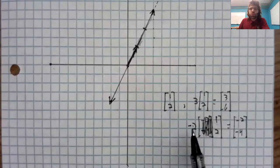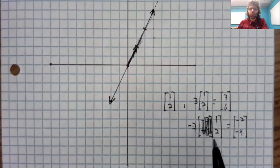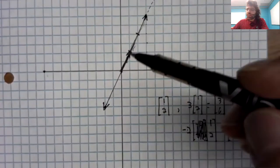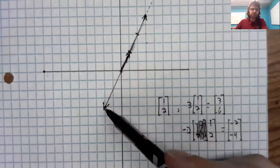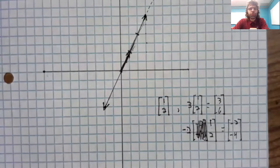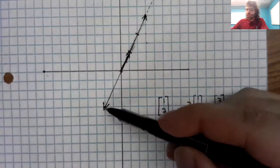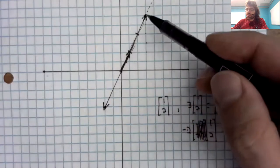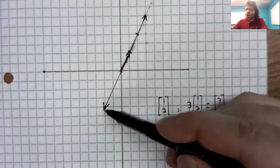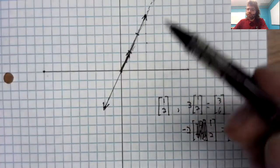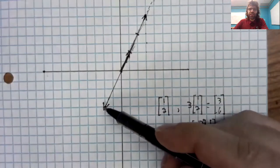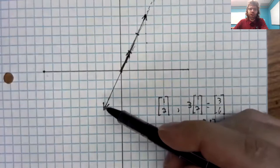And this scalar multiplication did change the direction of the vector. Instead of going up and to the right, it's going down and to the left. But it changed the direction in a very specific way. It perfectly reversed it. So this vector and this vector and this vector are all on the same straight line. It's just that this vector is pointing down the line instead of up it.